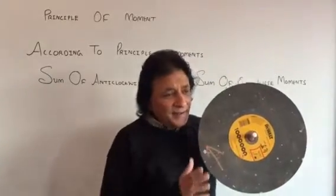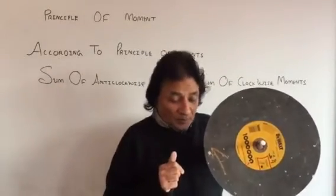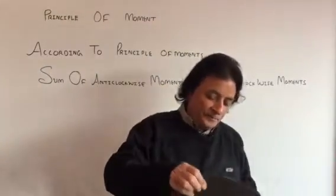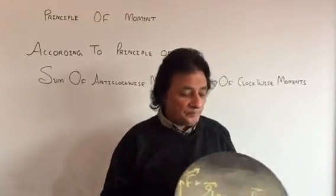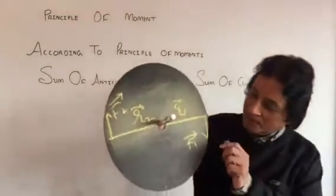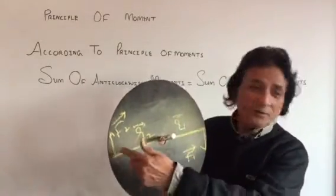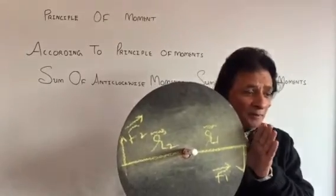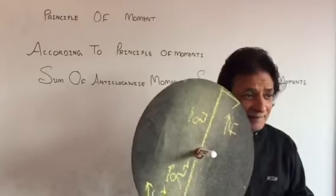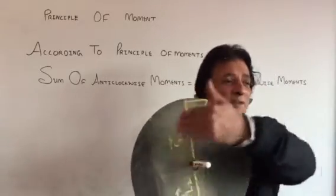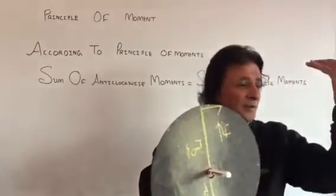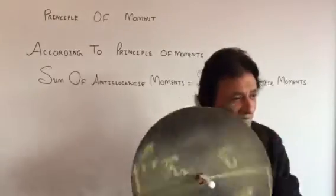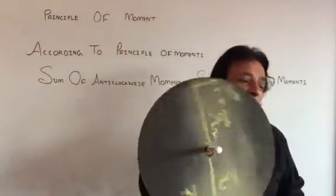We'll take the algebraic sum of the moment of each force. This is F1, R1, F2, R2. If I create a moment like this — F1, R1 equal and opposite, F2, R1 — the net resultant moment is zero. Sum of anti-clockwise is equal to sum of clockwise.